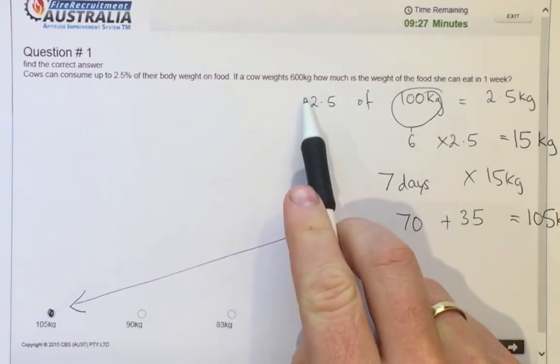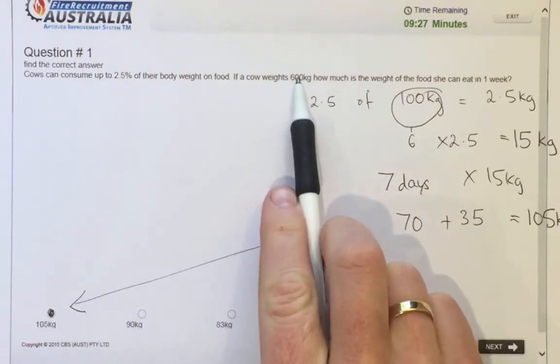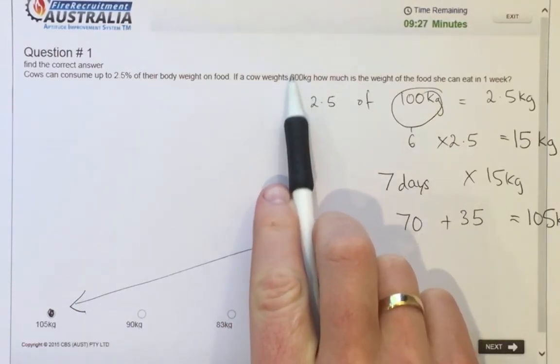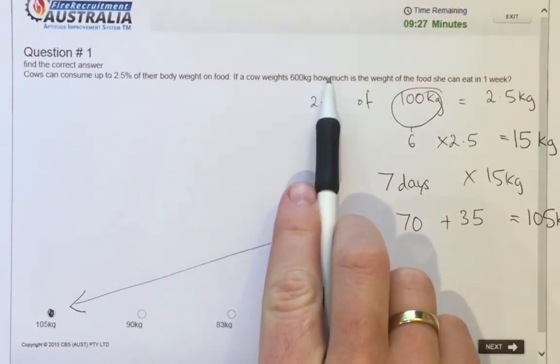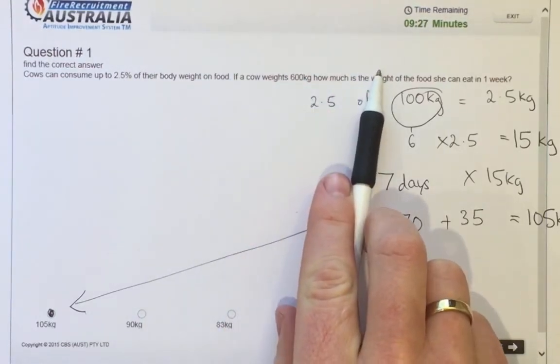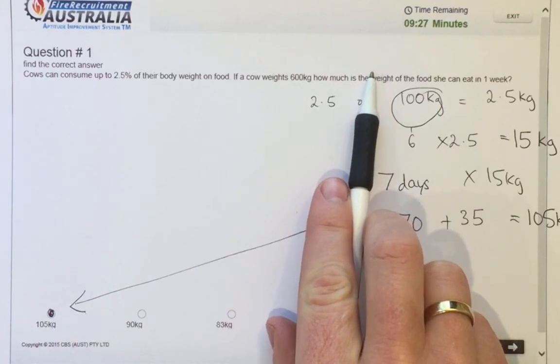So I find the best way to do these is any percentage, I like to break down into 100 because it makes it easier. If that was 25 and we took it to 100, it would be 25 kilos. I hope this one's helped and we'll see you on the next one.